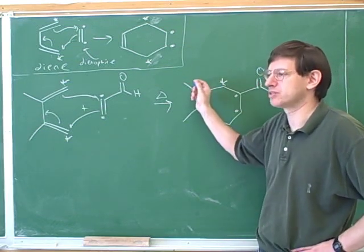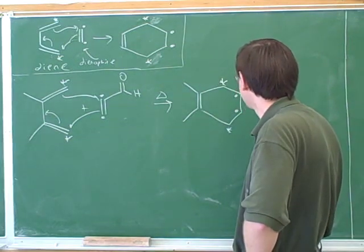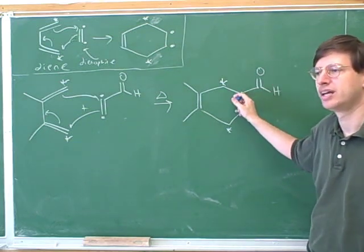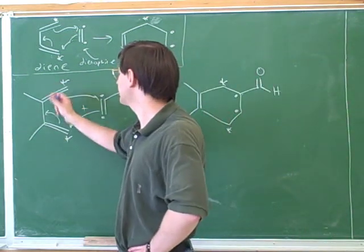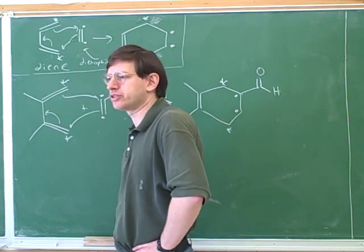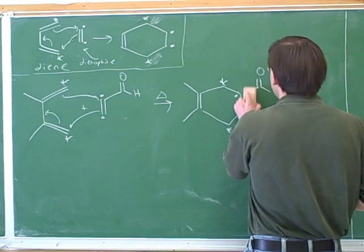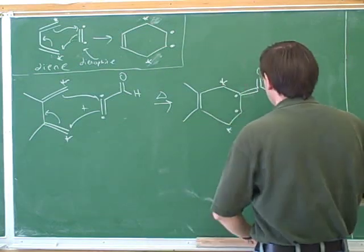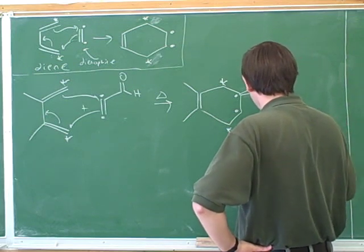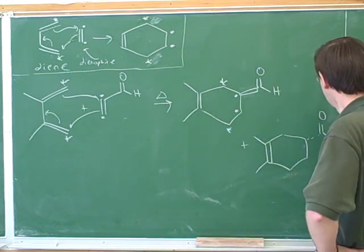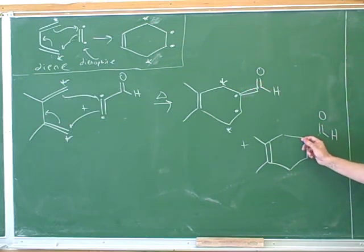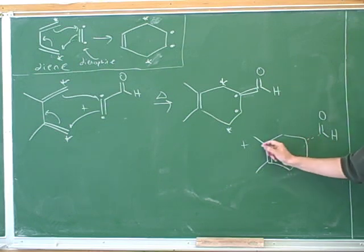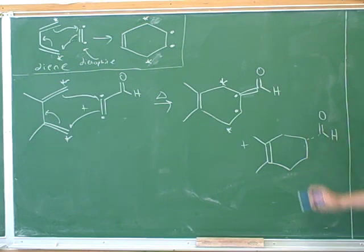That's something the TAs definitely take points off for, so we need to draw the geometry accurately here. Now, is this a stereocenter? Yes. So now we should be showing wedges and dashes over here. Because all of the atoms that are reacting here are trigonal planar, would we expect to get one or two products? Two. We would expect to get both the outcome where this is on a wedge and the outcome where this is on a dash, and these are enantiomers of each other. This is tetrahedral, not trigonal planar, so here it is appropriate to draw wedges and dashes — not appropriate next to the double bond, but appropriate next to the single bonds.